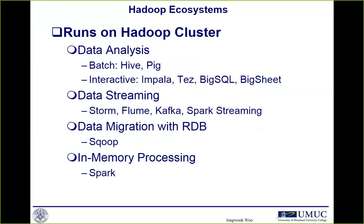Data streaming is another important business need. Hadoop has Storm, Flume, and Kafka, and Spark has the Spark Streaming API to handle streaming data — to store and compute almost in real time for your business. Also, to exchange data between RDBMS and Hadoop HDFS, Sqoop is a famous Hadoop ecosystem tool. For much faster computation, Spark came up as an in-memory processing engine and is actually replacing Hadoop MapReduce. HDFS is a file system that can be used with Spark, and Spark is a computing engine.